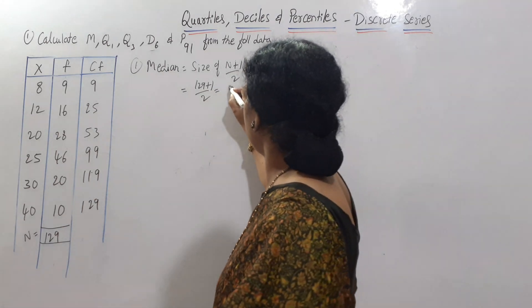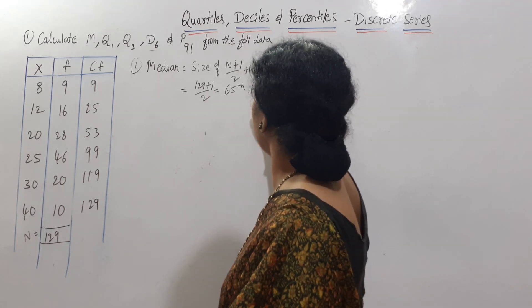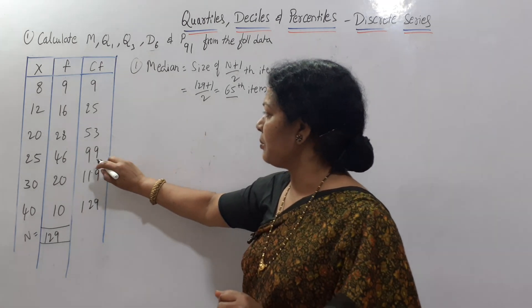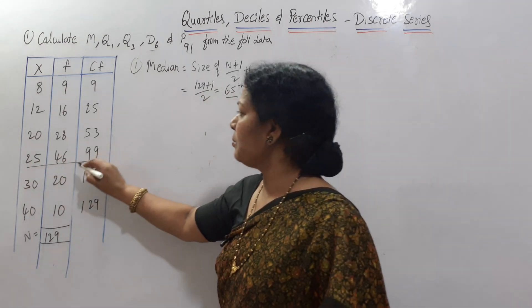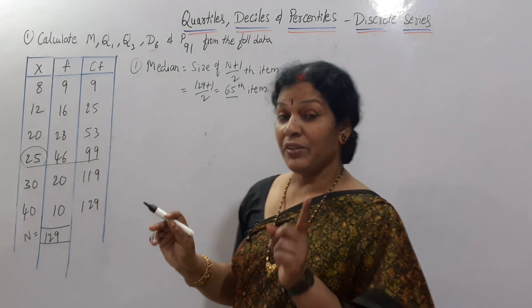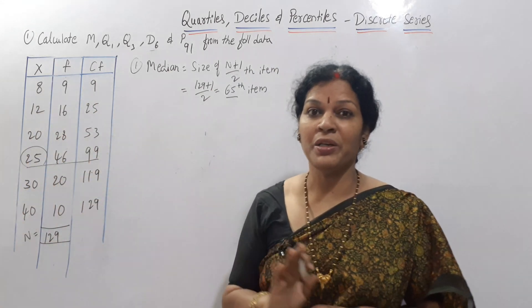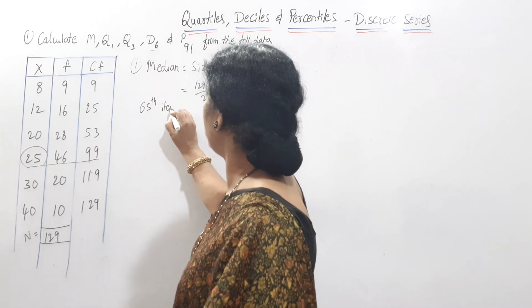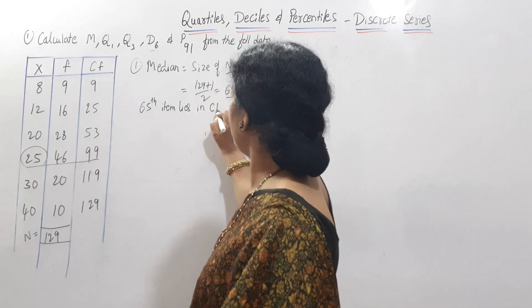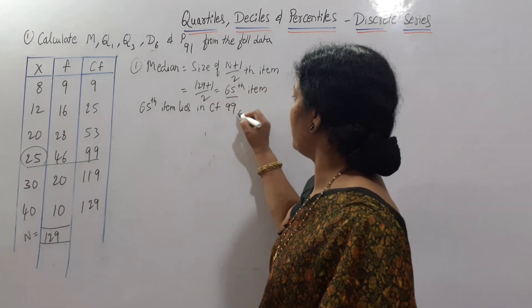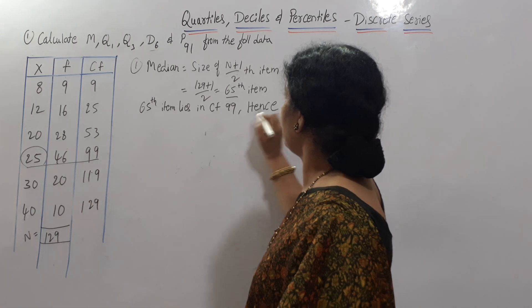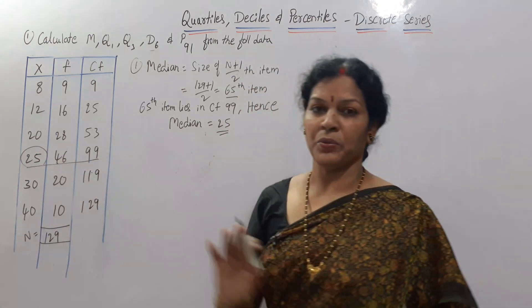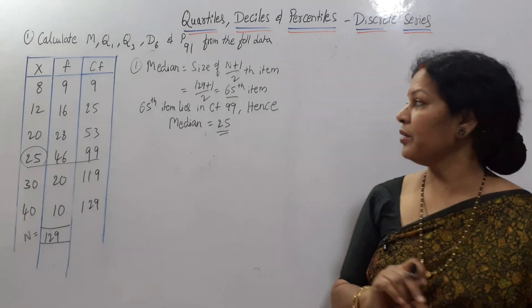The 65th item lies in the cumulative frequency of 99. Hence, median = 25. The X value corresponding to CF 99 is 25, so Median = 25.